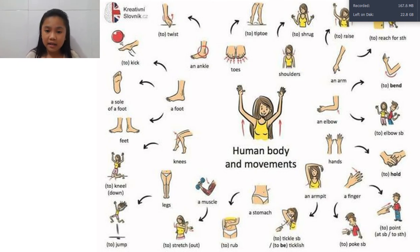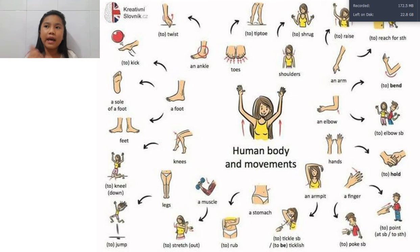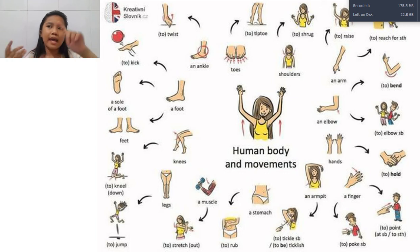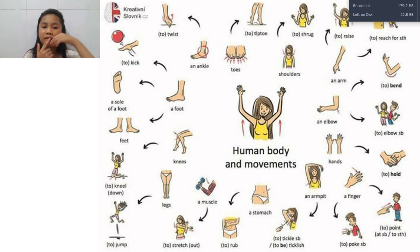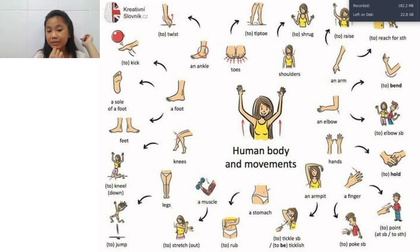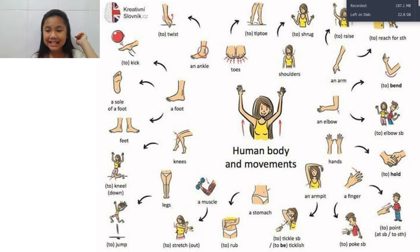There are a lot of body parts that I couldn't include here. There's a lot of them in total, like hair, face, eyes, mouth, ears, neck, shoulders, body, hands, arms, elbows, legs, ankles, feet, sole of the foot, knees, muscles, and armpits. Yes, there are a lot of body parts that make up our body, and they all help us do one thing — to act, communicate with people, and also help us stay alive. It's really important.